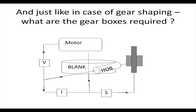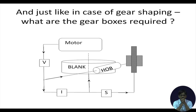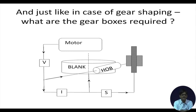Let us see the configuration proposed for the different gear boxes, first considering the preliminary case not including helical machining. We have a single motor, from which we have the speed gearbox. Please note: instead of writing Uv, Ui, Us, the gearboxes are represented by small boxes. V stands for speed gearbox, I stands for index gearbox, and S stands for feed gearbox. As discussed in case of shapers, Uv controls the cutting speed, Ui controls the number of teeth being cut, and Us controls the feed in millimeters per revolution of work piece.